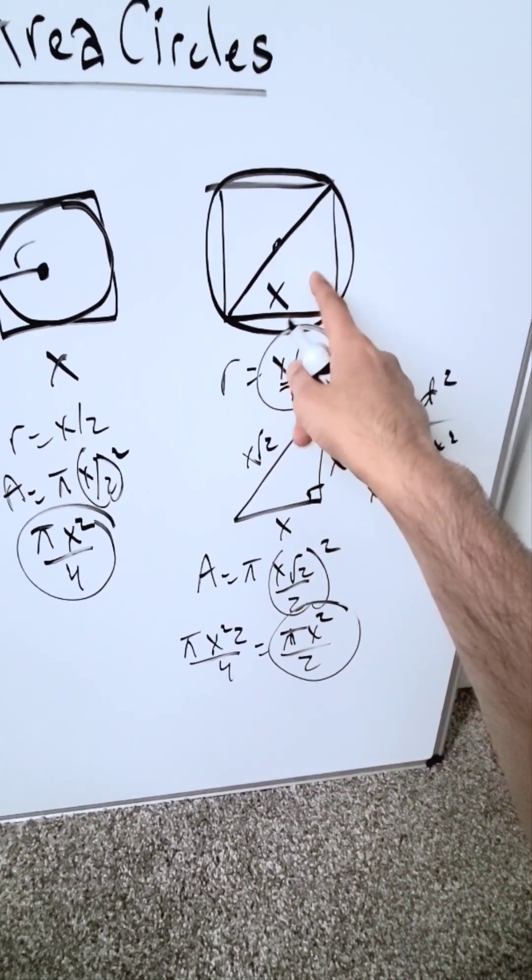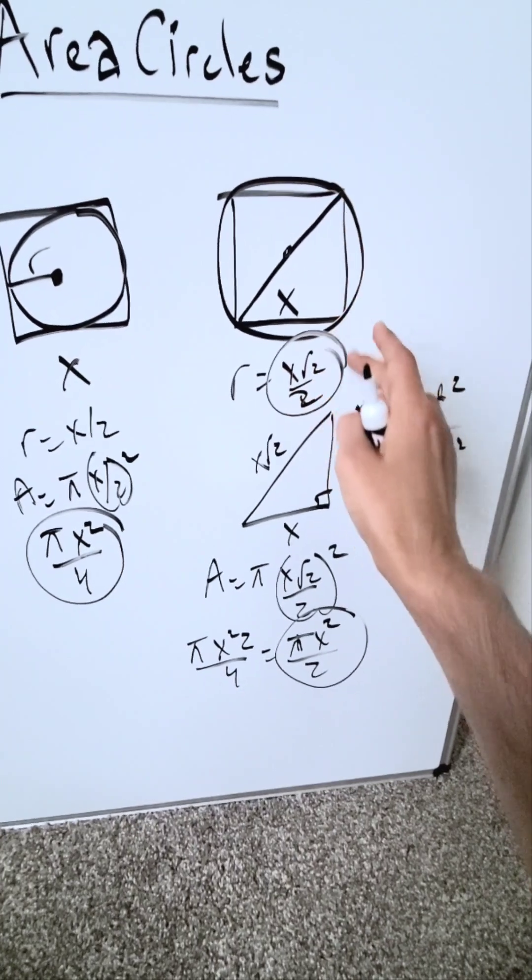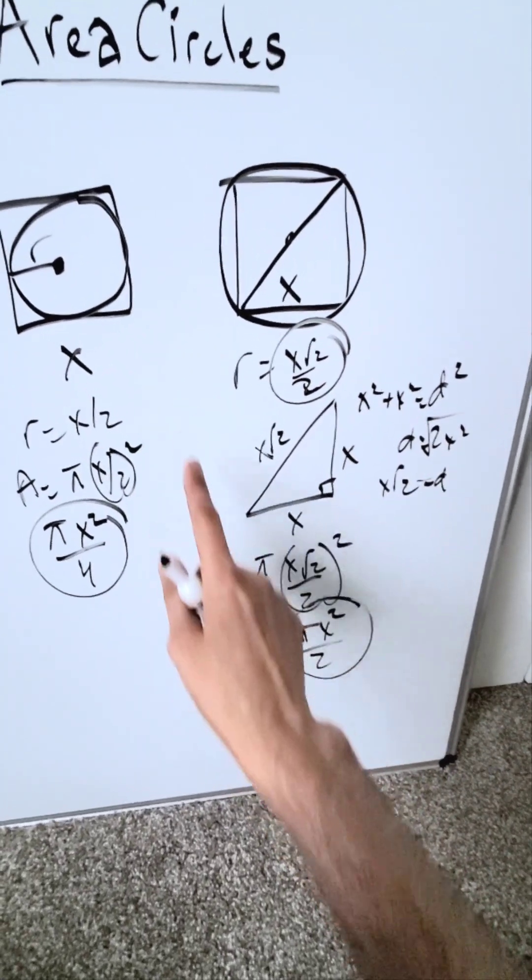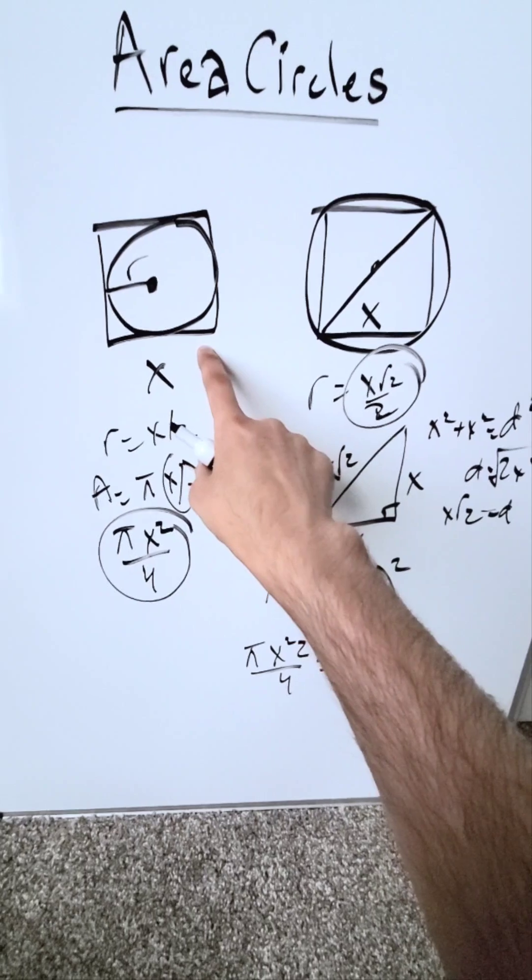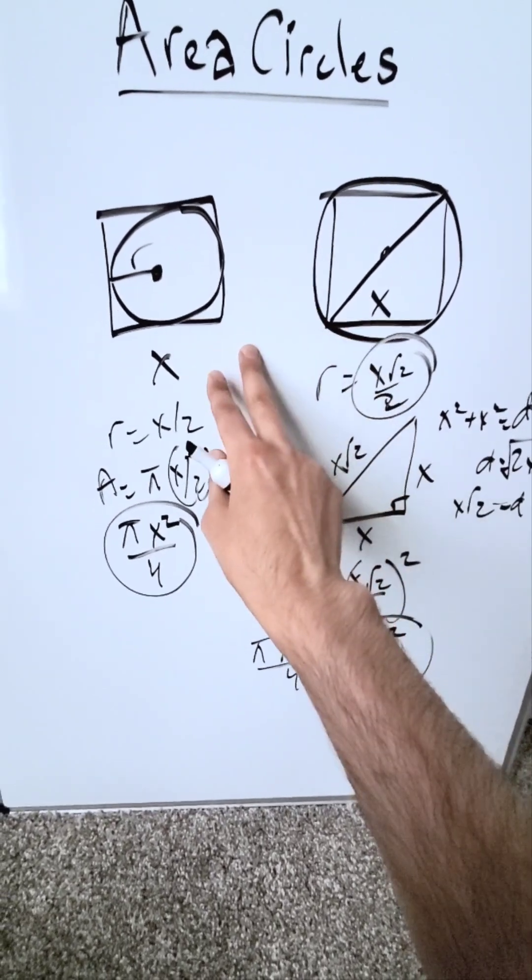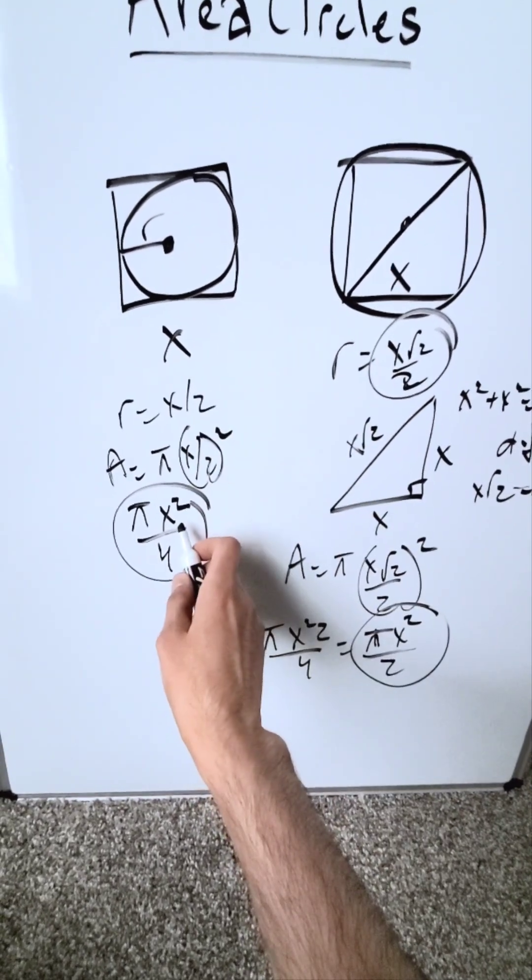Now, the area of this circle which is located outside, meaning the square was inscribed in that circle, is πx²/2. In this case where the circle is inscribed in that square, and both squares have equal dimensions, it's πx²/4.